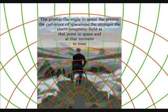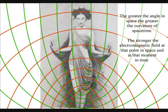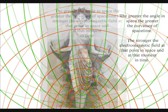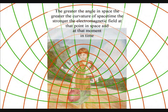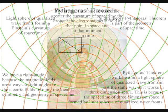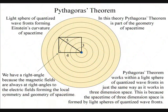The greater the angle in space, the greater the curvature of space-time, the stronger the electromagnetic field at that point in space and at that moment in time. The magnetic fields are always at right angles to the electric fields, forming the local space-time symmetry and geometry.